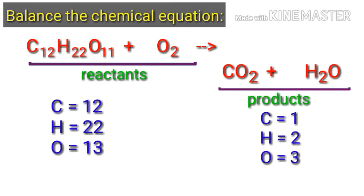On the product side, there are 1 carbon atom, 2 hydrogen atoms and 3 oxygen atoms. The number of atoms is not balanced on both sides.